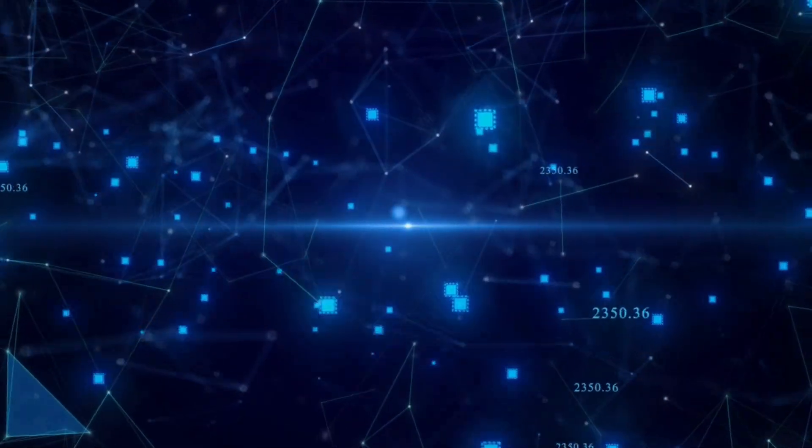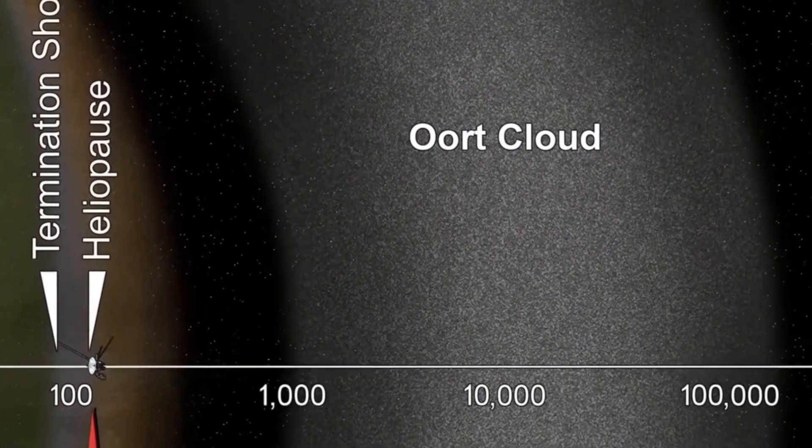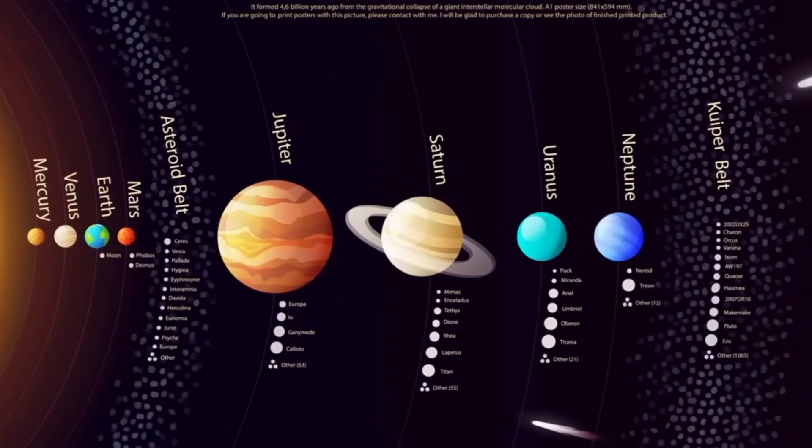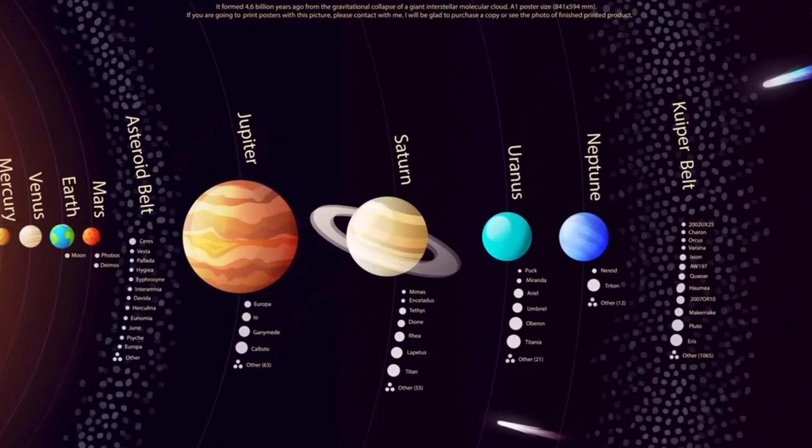We encounter the Oort Cloud, that's 100,000 astronomical units from the Sun, about 1.5 light years distance. The Oort Cloud represents the final frontier of our solar system boundary.